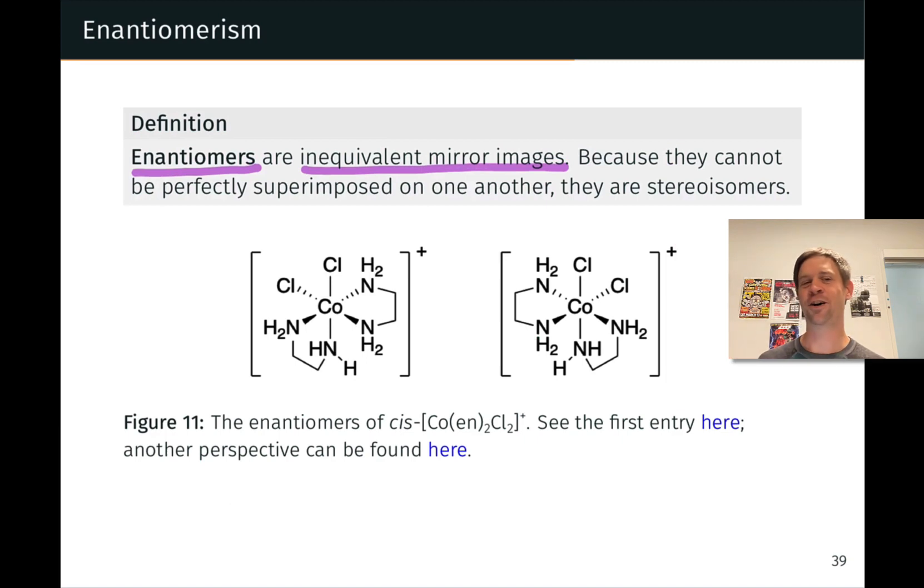Now, enantiomers are different. Enantiomers are stereoisomers that are mirror images of each other. And they are inequivalent or non-superimposable mirror images. If we want to compare two molecules and make sure that they are identical, they correspond to the same compound, we should be able to perfectly superimpose all of their atoms and bonds, perfectly overlay them so that all of the atoms and bonds line up exactly. You can't do that with enantiomers.